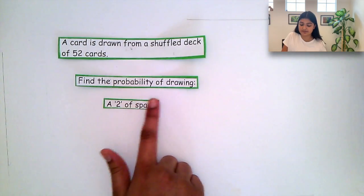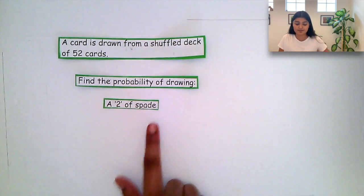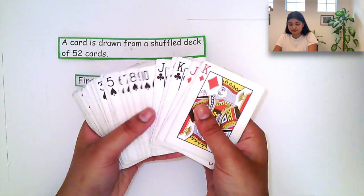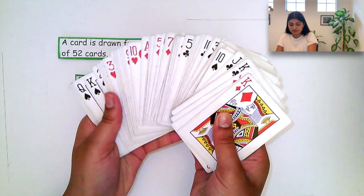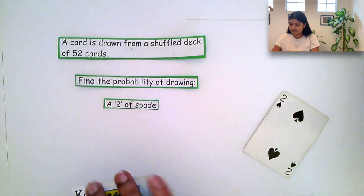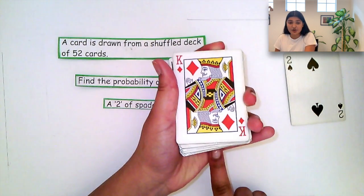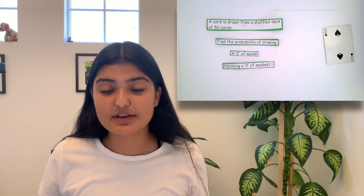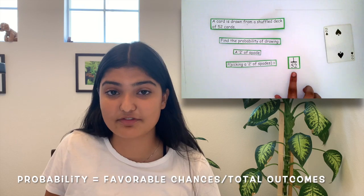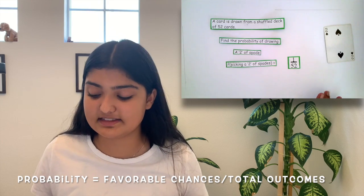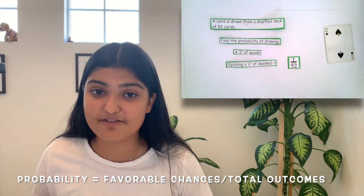Find the probability of drawing a 2 of spades. Here we have our deck of cards. As you can see, there's only one 2 of spades. There is a single card out of a total of 52 cards. So we know that the probability of picking a 2 of spades is 1 over 52, as there is 1 single 2 of spades, which is the number of favorable chances over the total outcomes, which is a total deck of 52 cards.